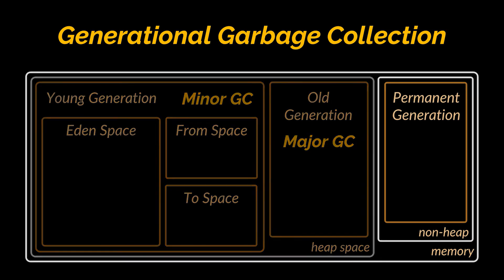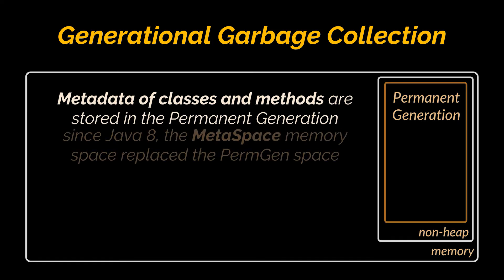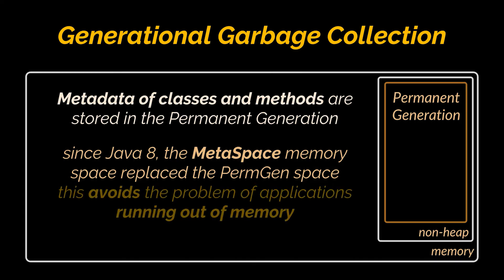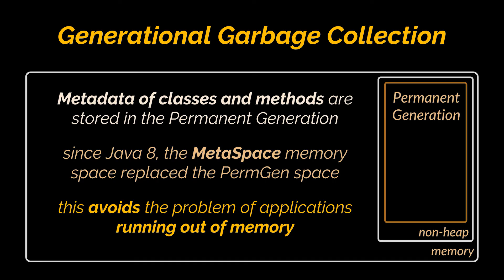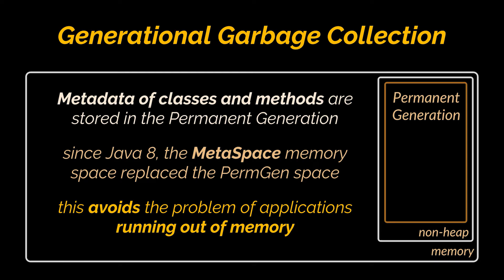The third and final generation is the permanent generation, where metadata such as classes and methods are stored. It is populated by the JVM at runtime based on classes used by the application. Starting with Java 8, the metaspace memory replaced the perm gen space. The implementation differs in that the heap space is now automatically resized, avoiding the problem of running out of memory due to the limited size of perm gen. The metaspace can be garbage collected, and classes no longer used can be automatically cleaned when metaspace reaches its maximum size.